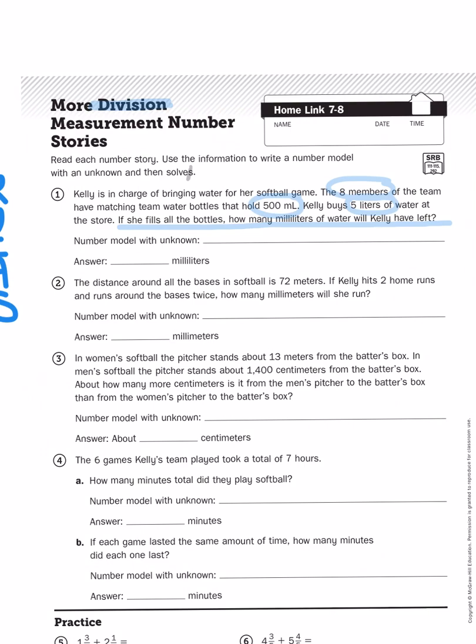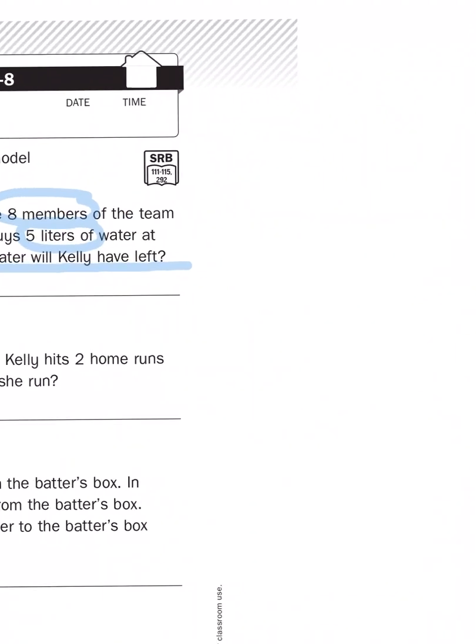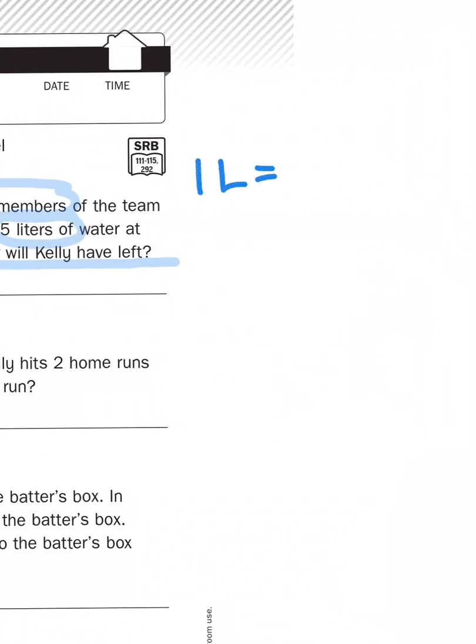So, the first thing that would be useful to know is how many milliliters are in a liter. Well, if you recall from previous lessons, for every one liter, that's the equivalent of a thousand milliliters. The nice thing about the metric system is that the prefixes that we put in front of measurement units are a clue to how many units are there. M, or milli, stands for a thousand. So, there are a thousand milliliters in one liter, which means that Kelly bought five thousand milliliters of water, because five times a thousand, of course, would give you five thousand.